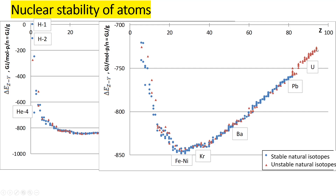If we increase the atomic number above about 40, the delta-E value gradually increases toward more and more positive values, meaning less and less stable nuclei. That is why elements with atomic numbers starting from 84 and above are unstable — they are radioactive. The radioactive decay will be discussed in the next slide, which will show the same diagram but zoomed in between lead and uranium.